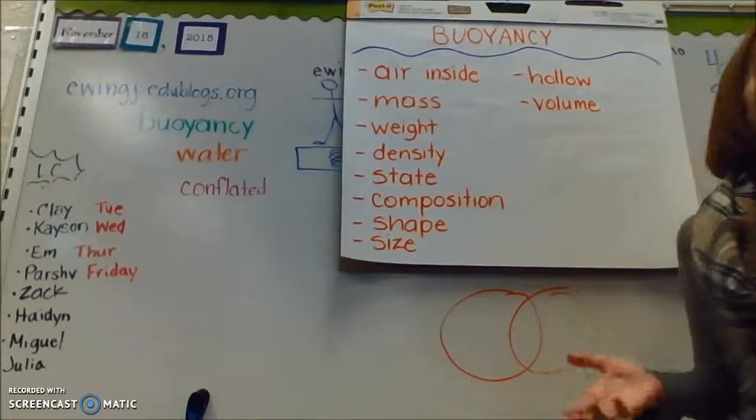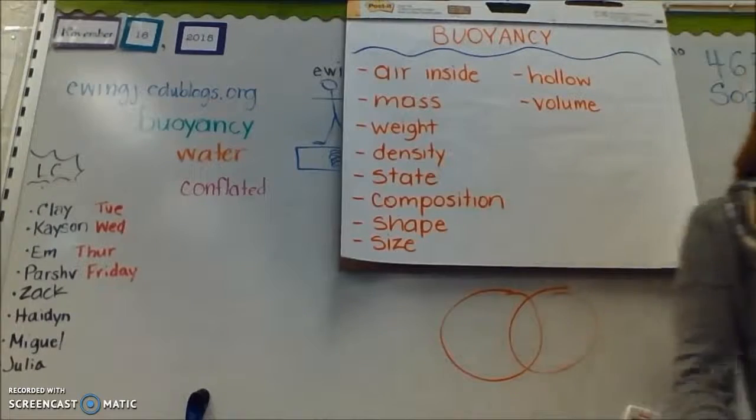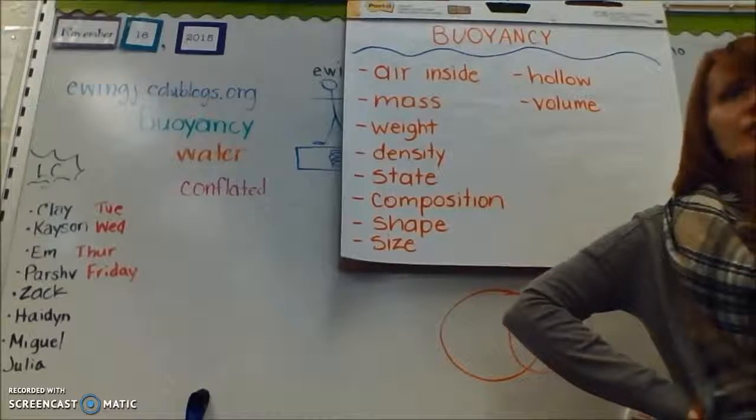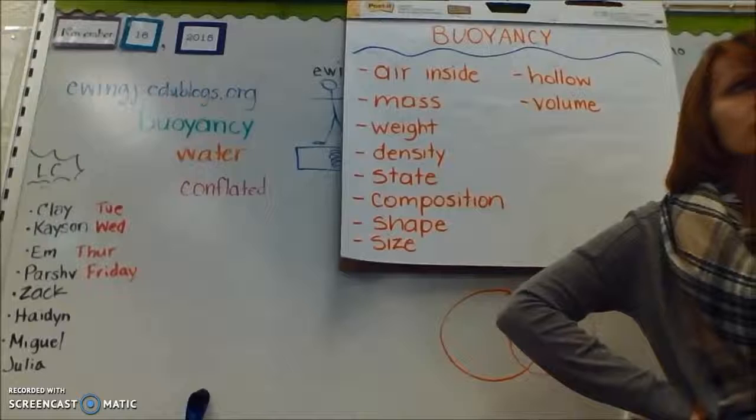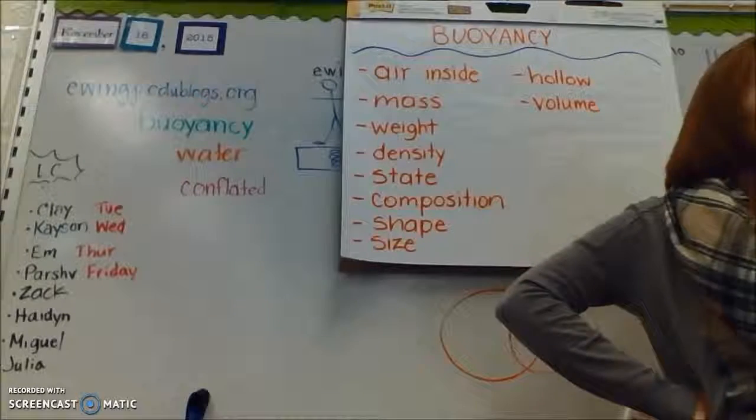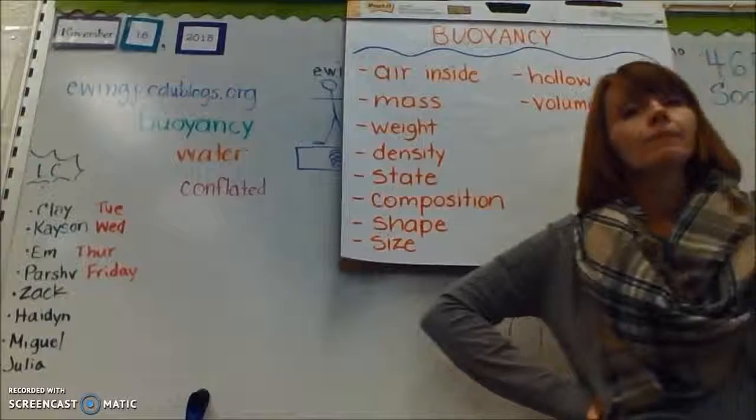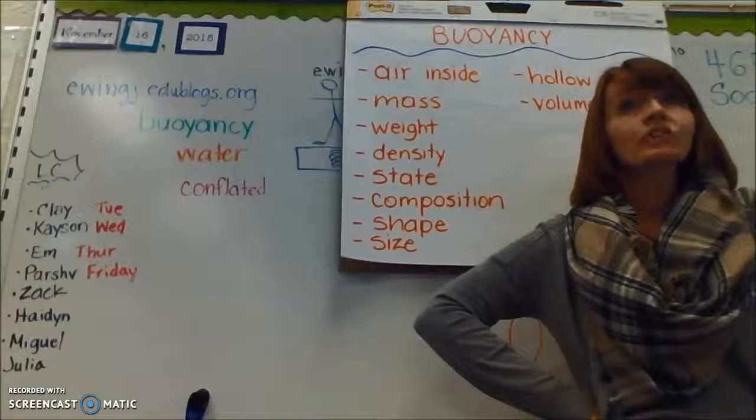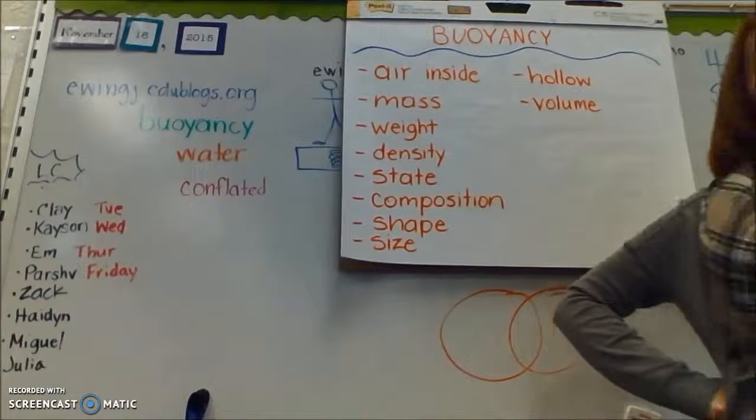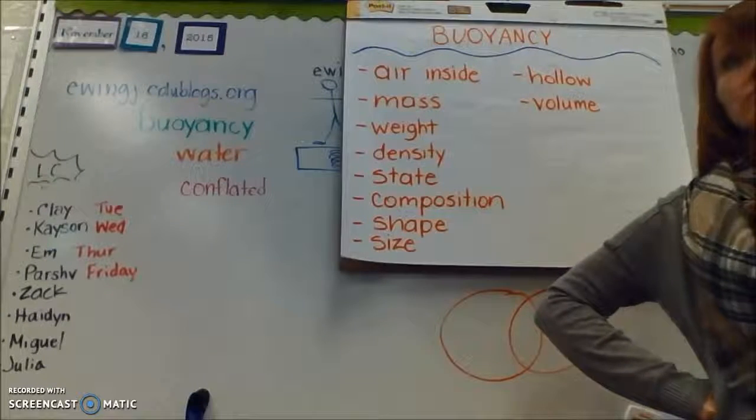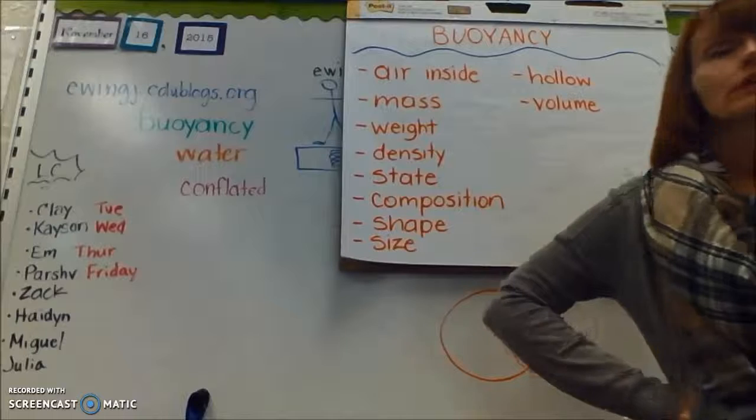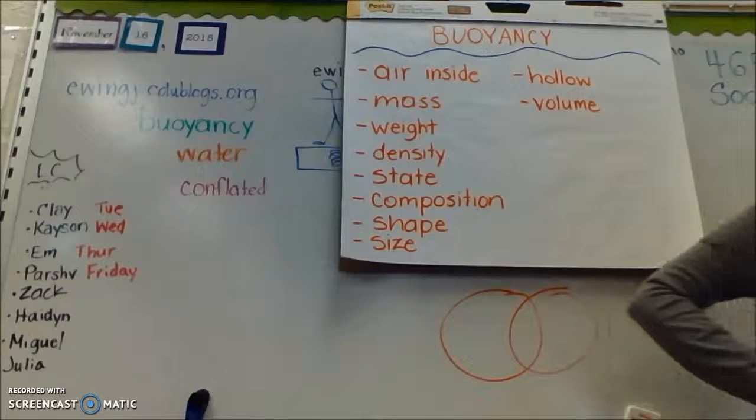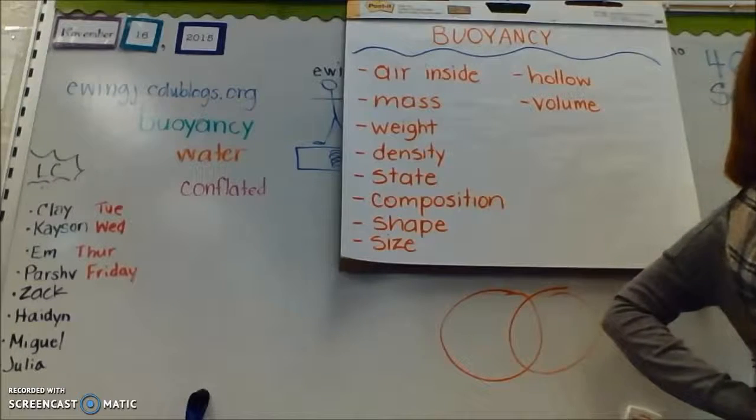People are pretty big and they float. Then something small that sinks? A rock. What about like a cruise ship? That's really big. And then something small that sinks? A penny. Now can you think of two things that have the same size and one sinks and one floats? Lacy, talk to your neighbor about that for a second.